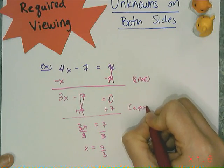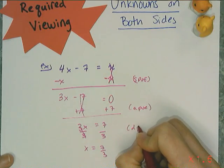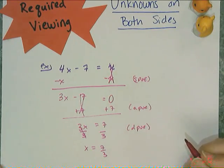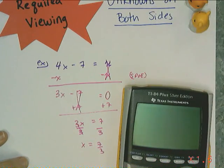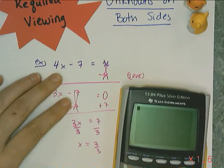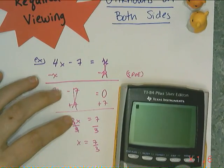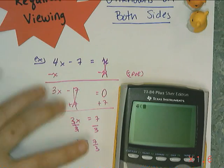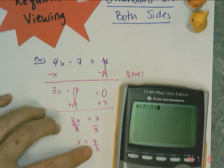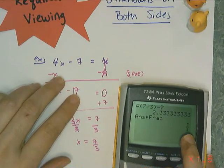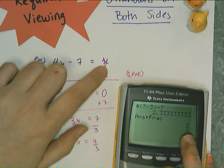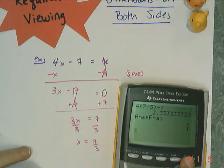And all I'm using are my properties of equality — APO, DePO, and SPO. Nothing fancy. So I need to check my answer. Checking these answers is a little different because you have to make sure that both sides are equivalent. So 4 times 7 thirds minus 7 equals 7 thirds — and it does. This side equals 7 thirds, that side equals 7 thirds, so that means I did the problem correctly.